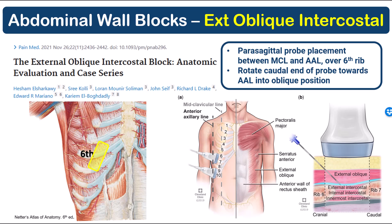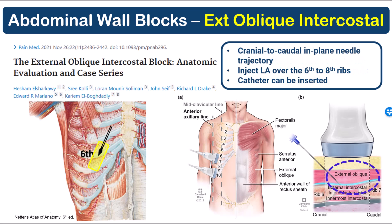This is an important detail, as I'll explain later. Needle insertion is from cranial to caudal, aiming to place the tip into the plane deep to the external oblique muscle and superficial to the rib and intercostal muscles. Injection occurs over the seventh to eighth ribs, which is ideal for covering the territories of T7 and lower, especially given that spread tends to be greatest in the direction of injection. A catheter can also be inserted in this location.